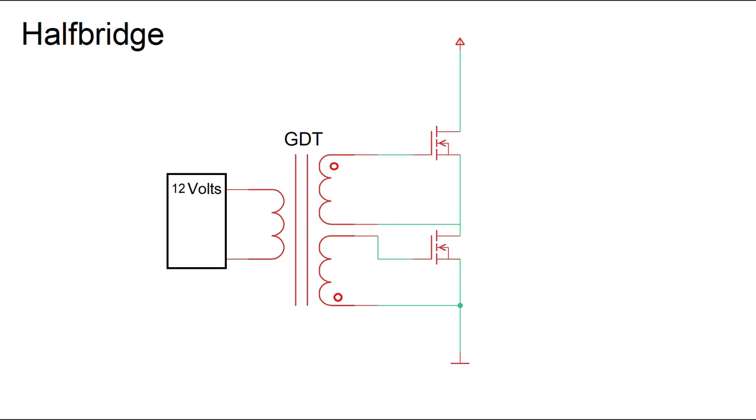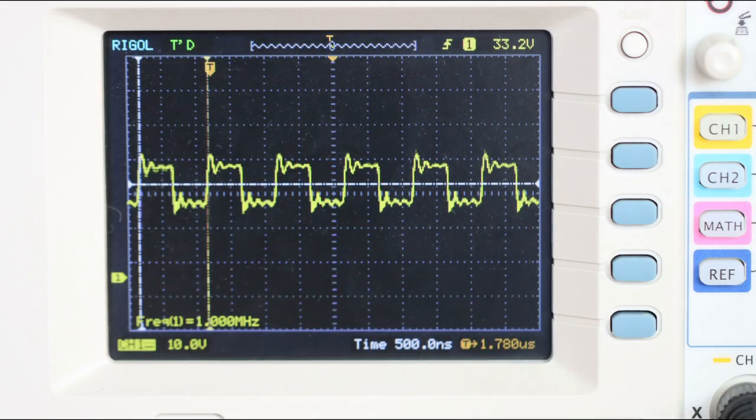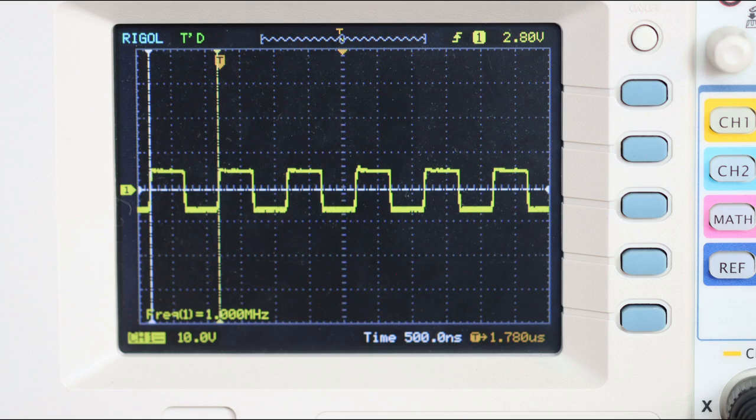Assuming the signal on the primary side has an amplitude of 12 volts, it's over 18 volts on the secondary side. The higher voltage has the advantage that we can smooth the gate signal well with diodes later.